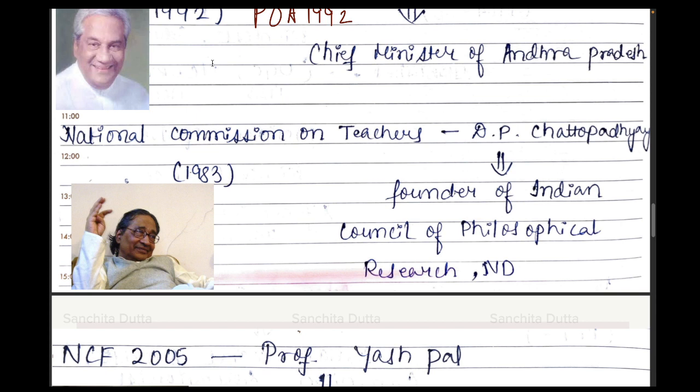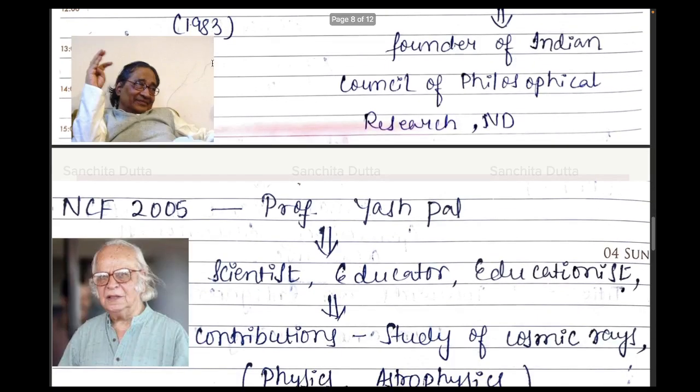Next is the National Commission on Teachers, which came in 1983. Its chairperson was D.P. Chattopadhyay. He was also the founder of the Indian Council of Philosophical Research, which is located in New Delhi. This commission's report spoke at length about teacher welfare, teacher salary, and improving teacher status.